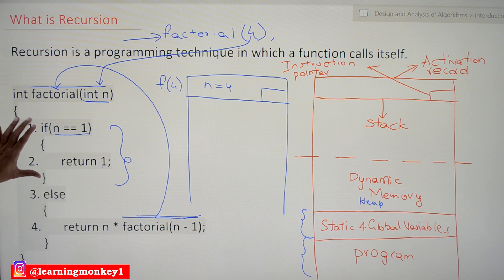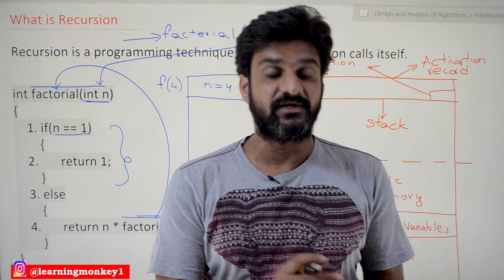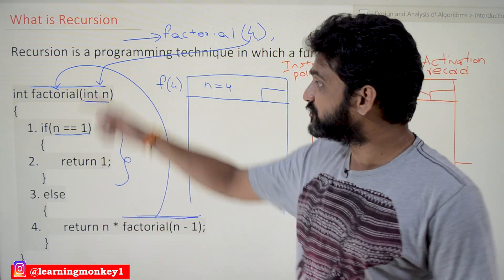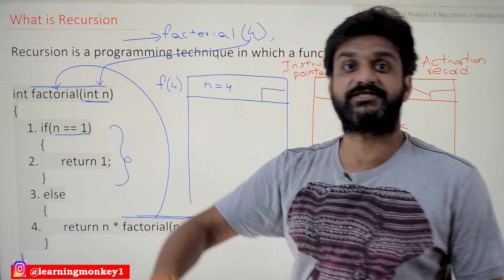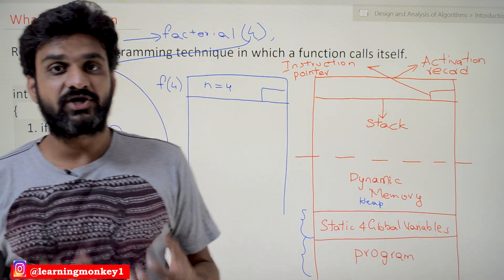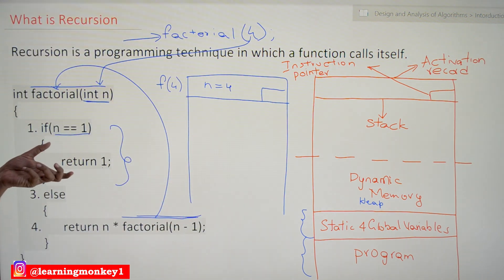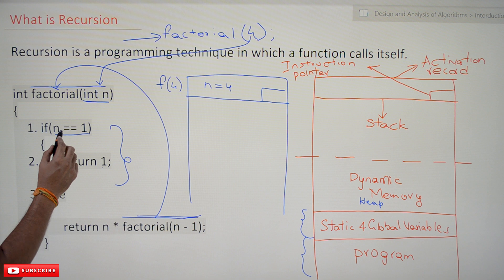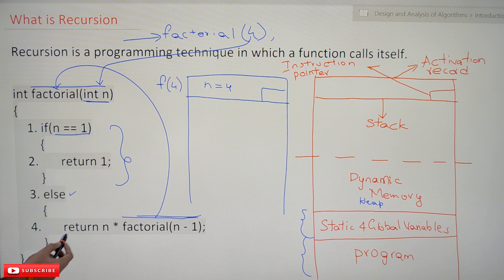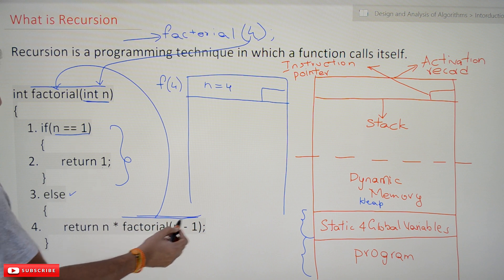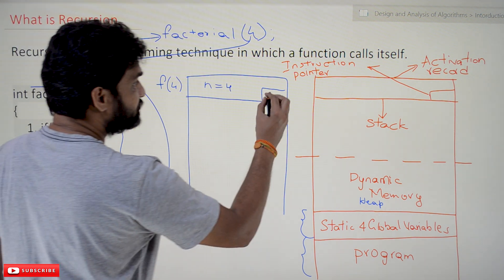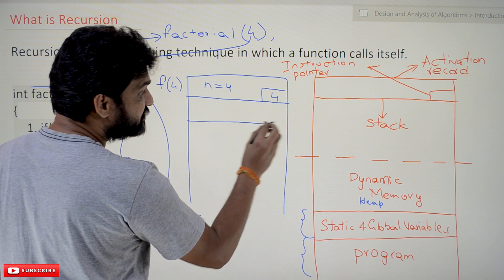Is n equal to 1? No — this is what we call the base case of the recursive function. Without this base case, the recursion would go into an infinite loop. The base case is where we break the recursive function. Since n = 4 is not equal to 1, we go into the else part: n into factorial(n-1), which is factorial(3). A new function call is made, and the instruction pointer is recorded. A new activation record gets created.